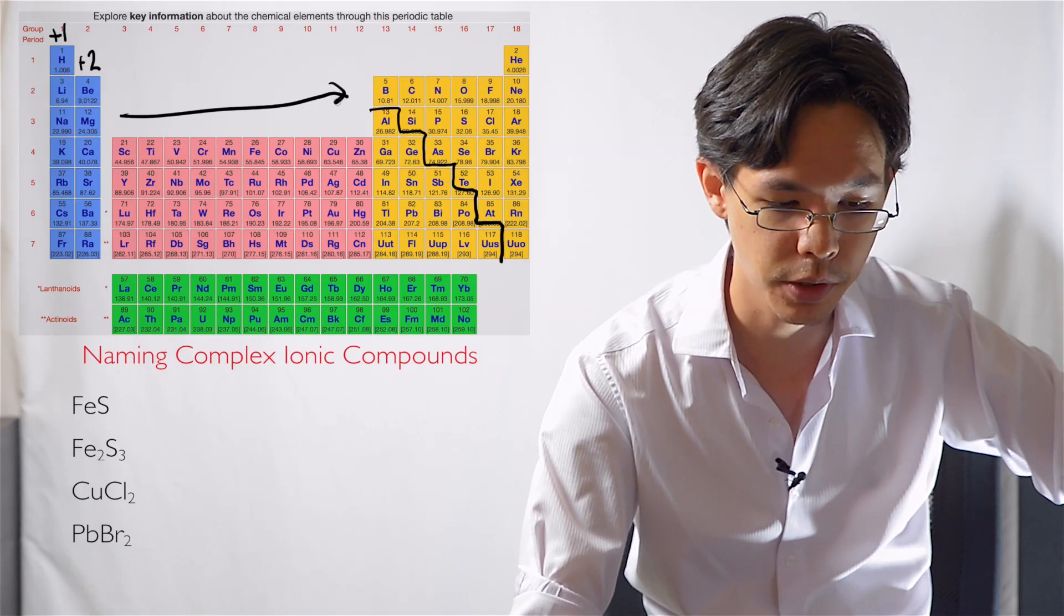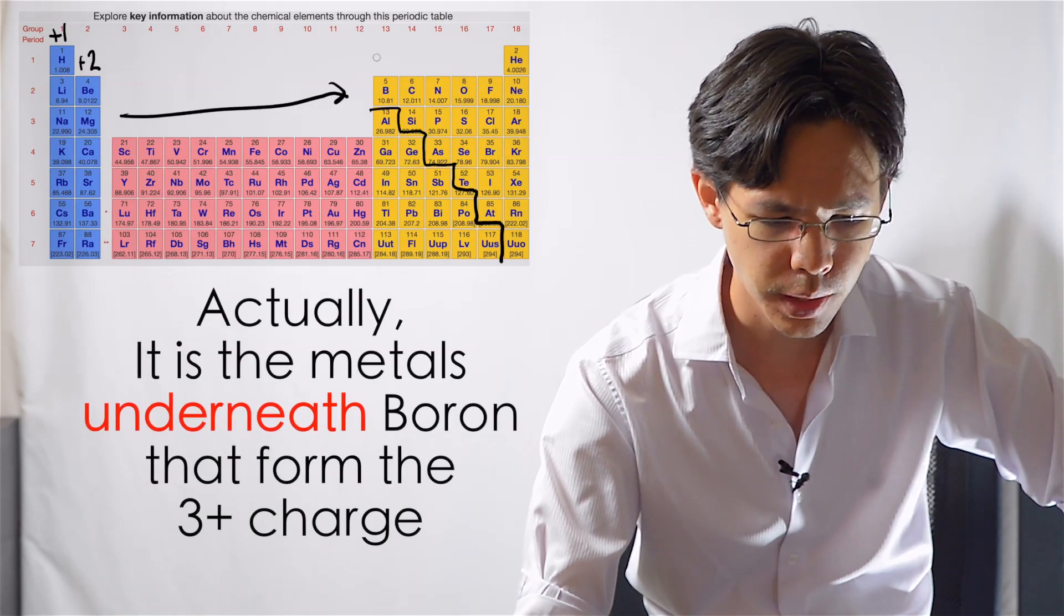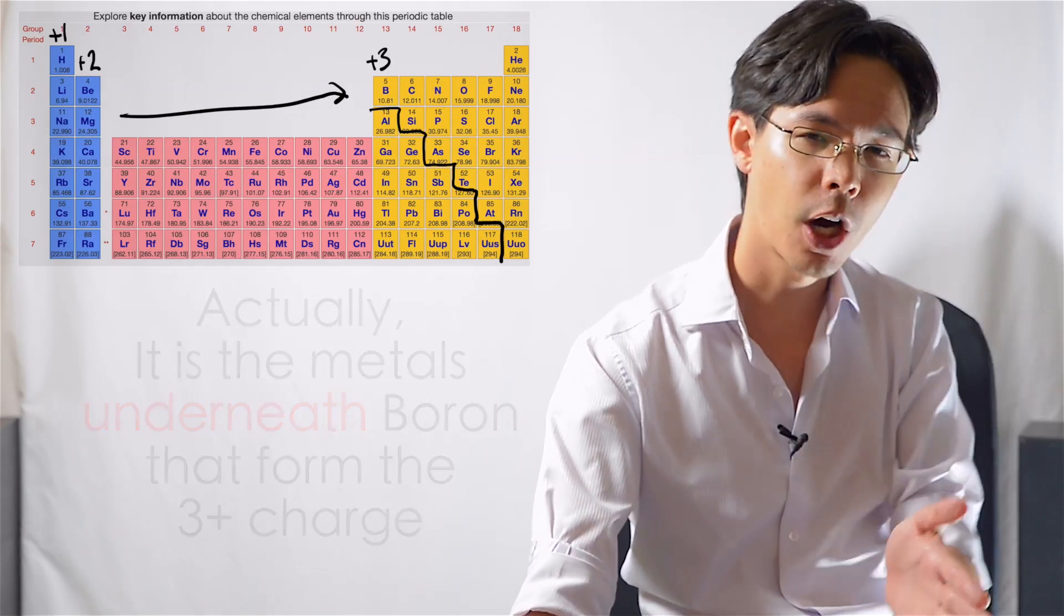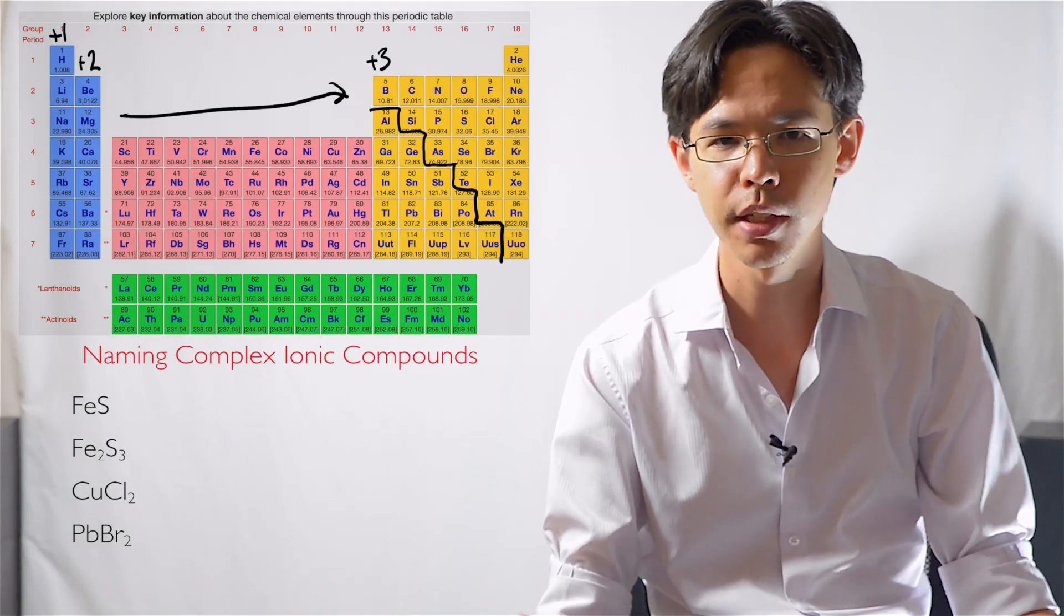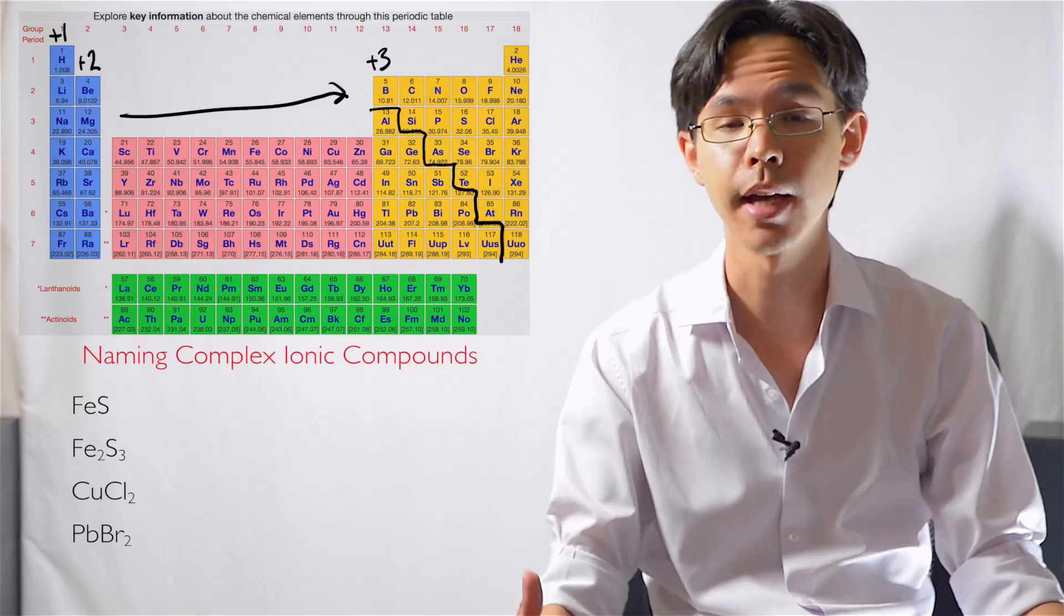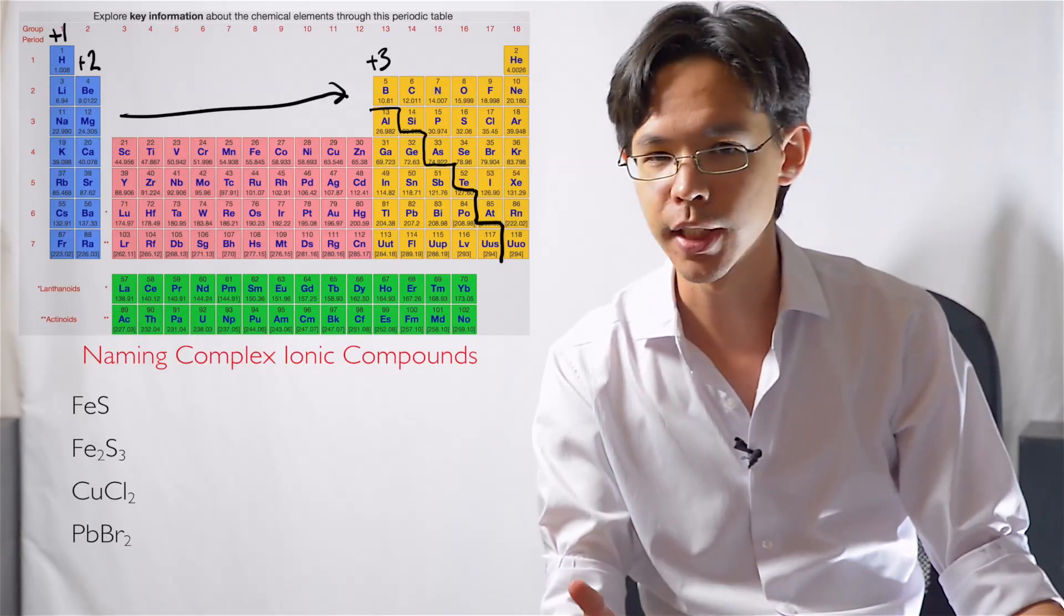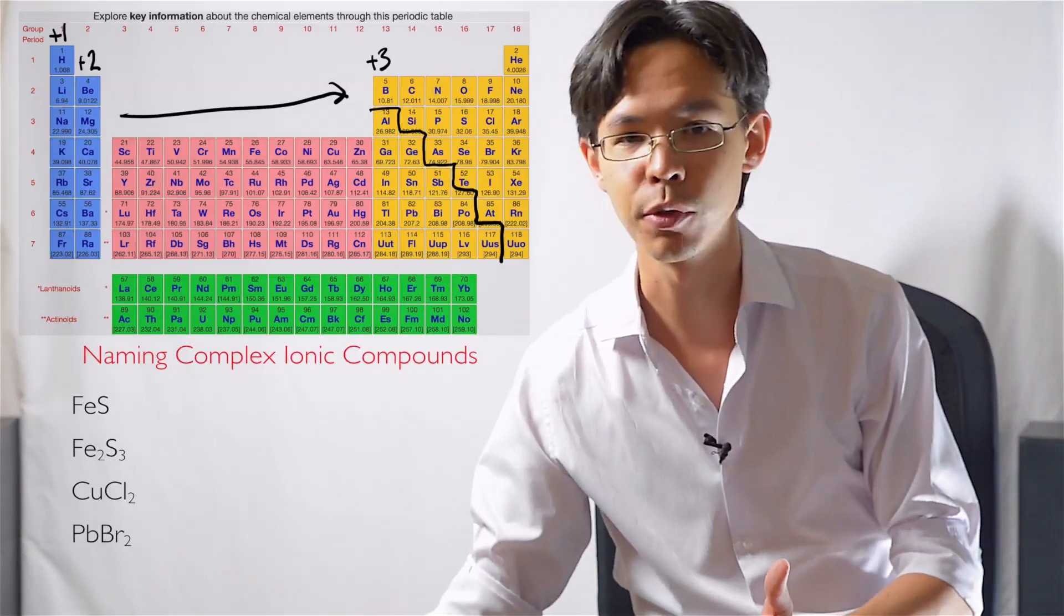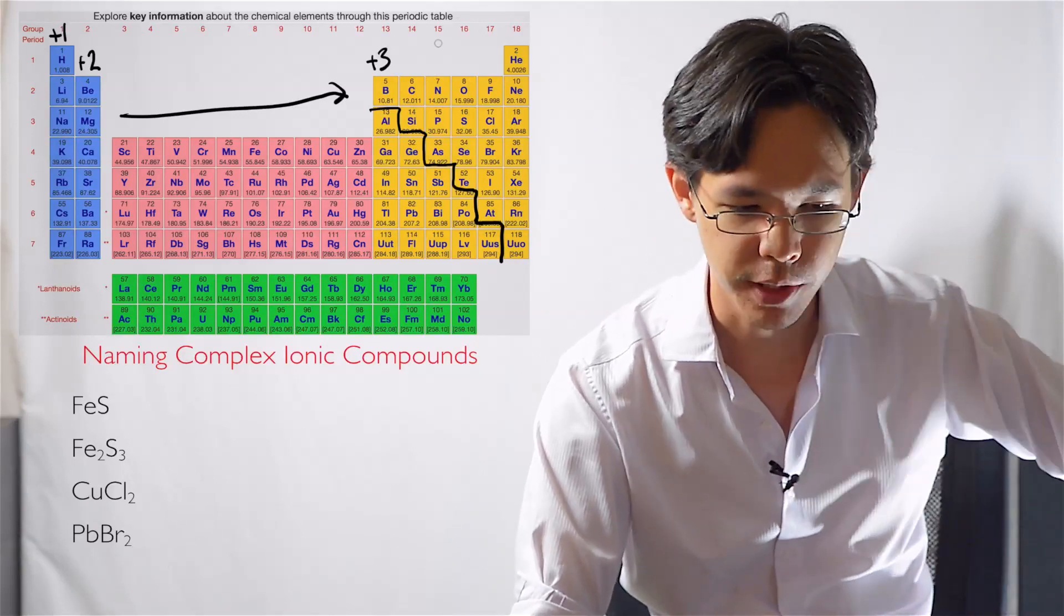You skip the transition metals across and you go to boron, and that will form a three plus charge. Then you get to carbon, and when you're at number four you're kind of in the halfway point, and it's not really easier to lose all of them and it's not really easier to gain another four of them, so they don't really form charges.